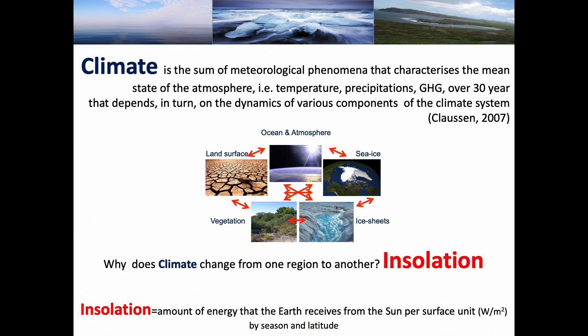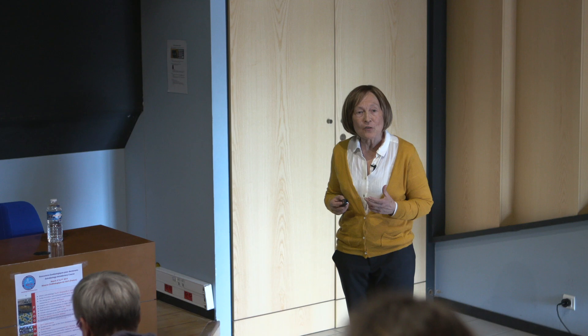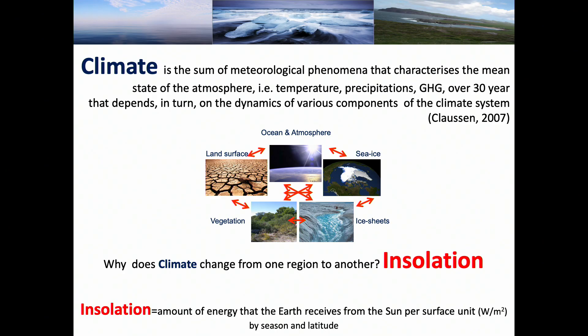The climate system components include the sea ice, the ocean, the ice sheets, the vegetation, and the land surfaces, as you will see later. But why climate is different from one region to another is because it's controlled by insolation. Insolation is the amount of energy that the earth receives from the sun per surface unit, by season and latitude.